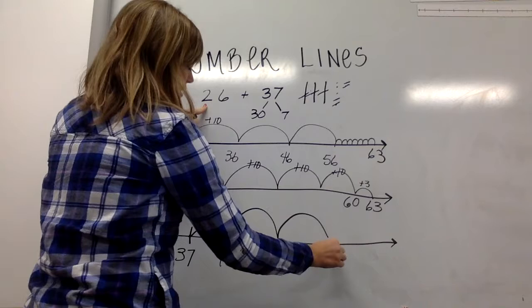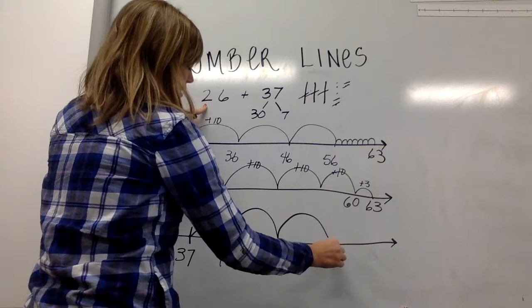Do my two 10 jumps, 50, 60. How many of those ones did I use? I used three. I have three more jumps plus three or I could count out one, two, three. I'm now at 63.